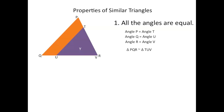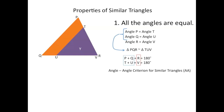One interesting thing about triangles is that all their angles add up to 180. So in triangle X, P plus Q plus R gives you 180 degrees, and in triangle Y, T plus U plus V gives you 180 degrees. So the moment we showed that P equals T and Q equals U, then automatically R must equal V. This is very convenient — when we show that angle P equals T and angle Q equals U, we can automatically conclude that two triangles are similar, without needing the third step. This is known as the angle-angle criterion for similar triangles, usually written shorthand as AA.